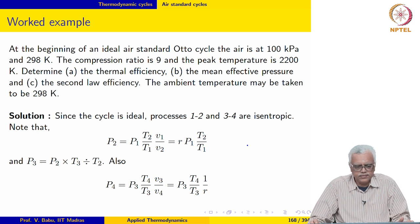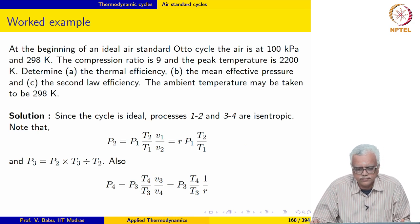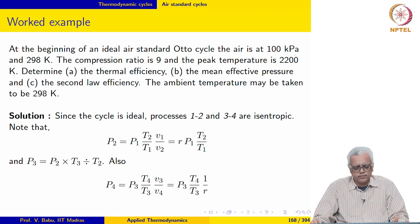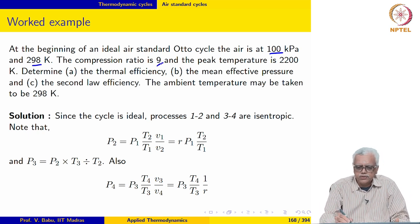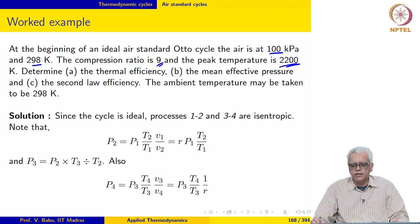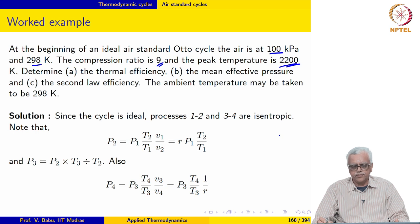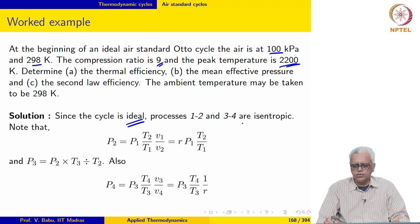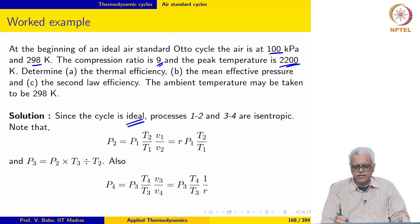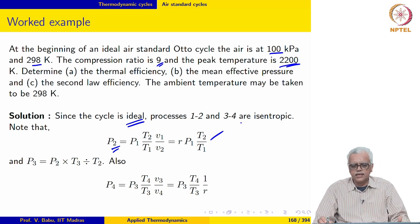Let us go through a worked example. At the beginning of an ideal air standard Otto cycle, air is at 100 kPa and 298 K; compression ratio is 9, and peak temperature is 2200 K. We are asked to determine thermal efficiency, mean effective pressure, and second law efficiency. We assume the cycle is ideal — processes 1-2 and 3-4 are isentropic — and write P₂ = R·P₁·(T₂/T₁) using the equation of state.